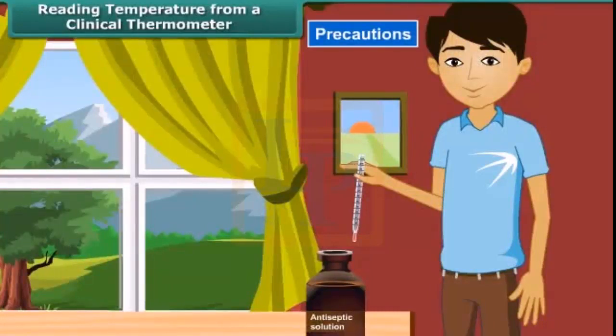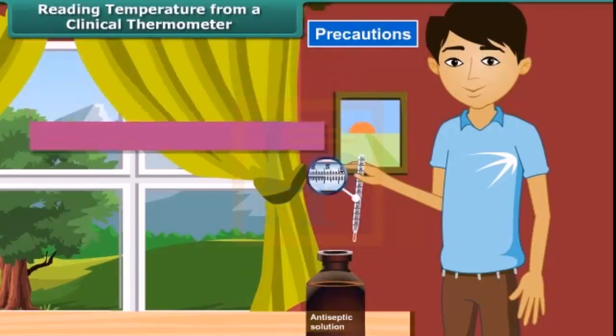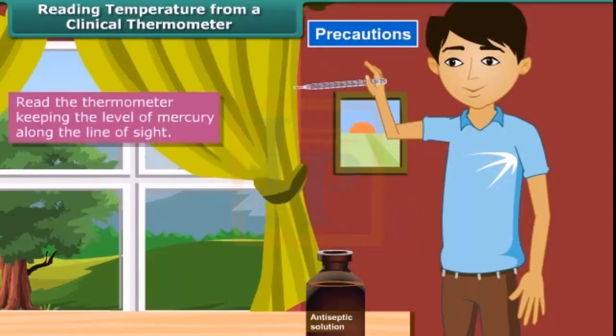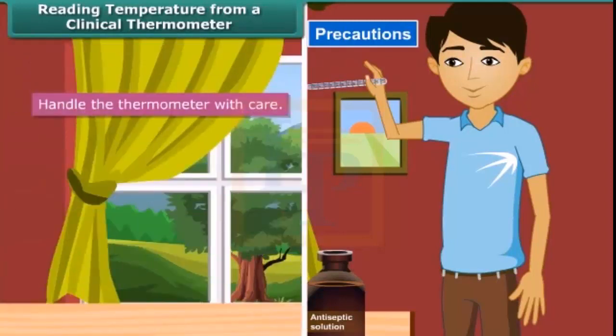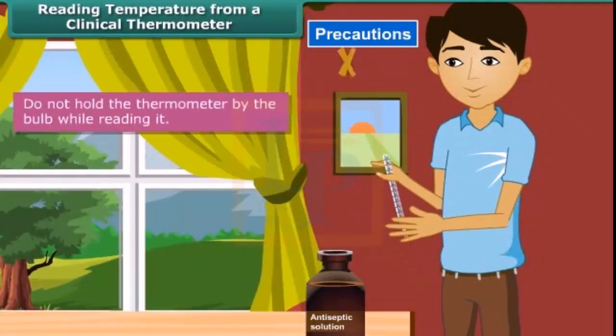Precautions to be observed while reading a clinical thermometer are as follows. Thermometer should be washed before and after use, preferably with an antiseptic solution. Ensure the mercury level is below 95 degree Fahrenheit. Read the thermometer keeping the level of mercury along the line of sight. Handle the thermometer with care. If it hits against some hard object, it can break. Do not hold the thermometer by the bulb while reading it.